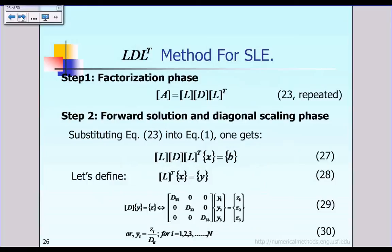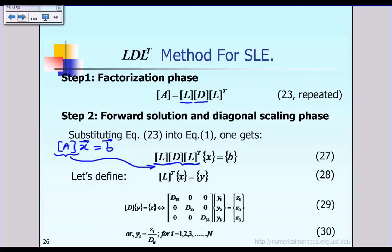Once we have the factorization of matrix A into LDL transpose from step 1, we substitute back into the original system AX equal to B. The product L transpose times X is defined as a new vector Y, so instead of writing L transpose X we use the vector Y.